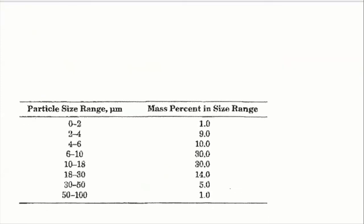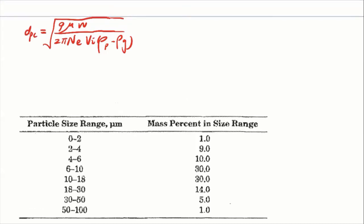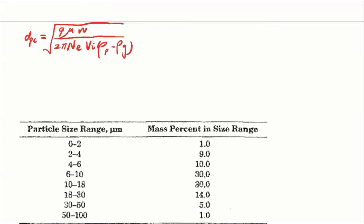The DPC is calculated by the square root of 9μW divided by 2π·NE·Vi·(ρp minus ρg). This is the equation we use to calculate the cutoff size.